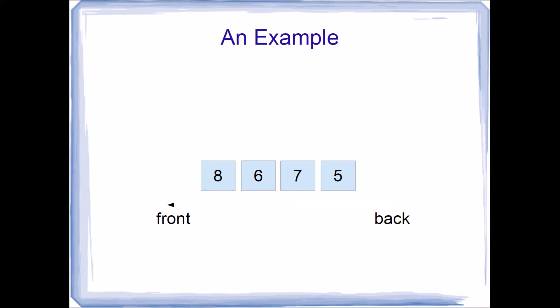Now let's say we want to remove values from the queue by performing dequeue operations. All values being removed are removed from the front, or left end of the array. We dequeue, assuming there's something in the queue, and remove that value. We repeat this for each dequeue operation until we're back where we started with an empty queue.